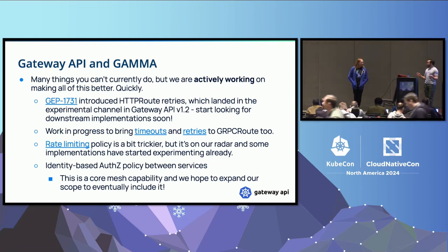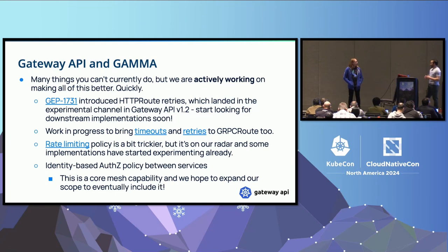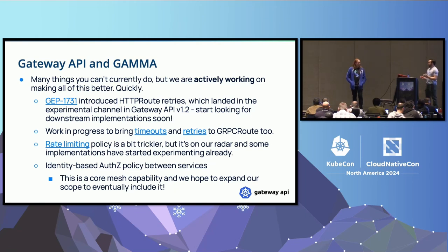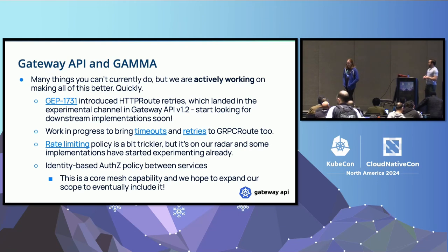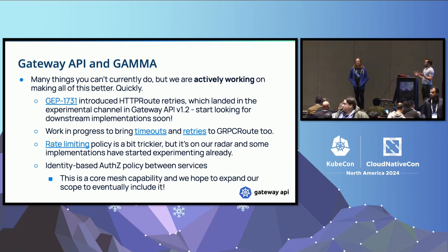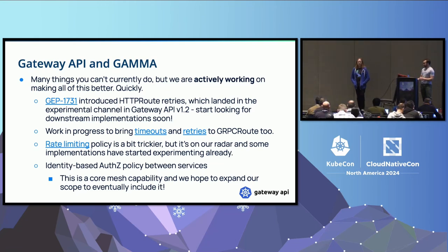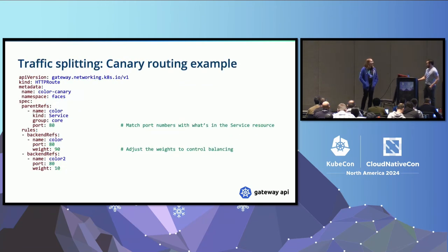Rate-limiting policy is a bit trickier with more divergence between implementations — it's on our radar and a few implementations have started experimenting with it. Identity-based AuthZ policy is another core service mesh functionality we hope to expand our scope to eventually include. We know AuthZ policy is possible to implement within each mesh; we're trying to solve the auth-n ingress problem first, making sure we can get those trusted users with validated identity through the ingress and into the mesh services. Auth is hard.